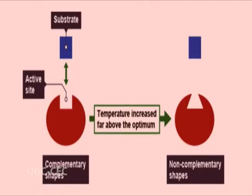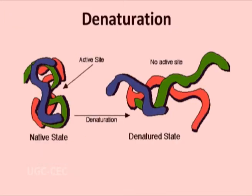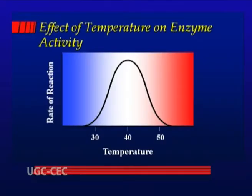As temperature increases, more enzyme molecule active sites become less complementary to the shape of their substrate, and more enzymes will be denatured, leading to a decrease in the rate of reaction. In summary, as temperature increases, initially the rate of reaction increases because of increased kinetic energy. However, the effect of bond breaking will become greater and the rate of reaction will begin to decrease. The temperature at which maximum rate of reaction occurs is called the enzyme's optimum temperature, which is different for different enzymes.